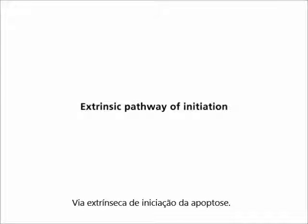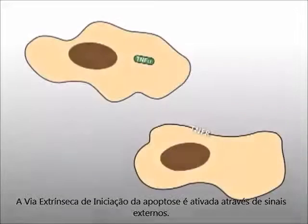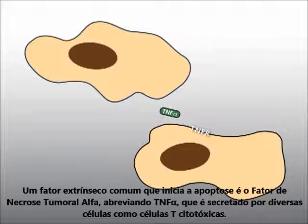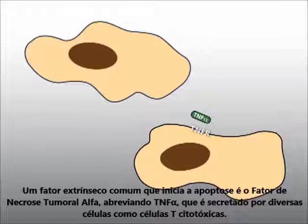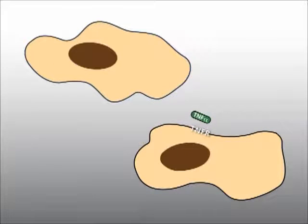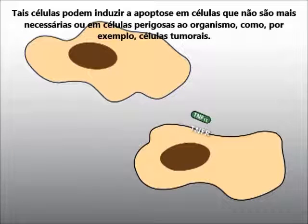Extrinsic pathway of initiation. The extrinsic pathway is caused by extracellular signals. A common extrinsic factor that initiates apoptosis is tumor necrosis factor alpha, abbreviated TNF-alpha, which is secreted by many cells, like T-killer cells. Such cells can induce apoptosis in cells that are no longer required or are dangerous for the organism, for example, tumor cells.